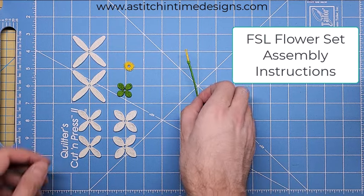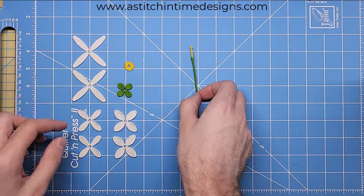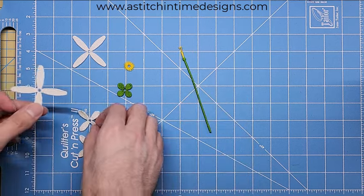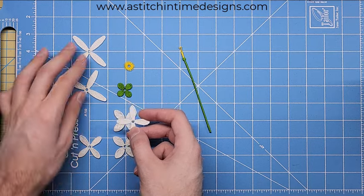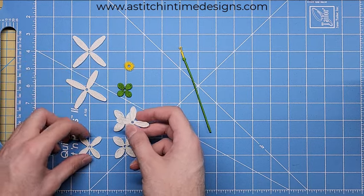All right, so let's put together our flower. As you can see, we have different types of petals we can use. The assembly method for each and every one is exactly the same though.